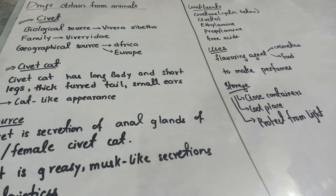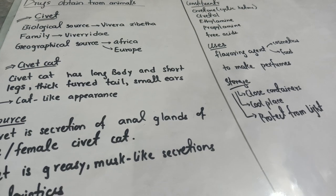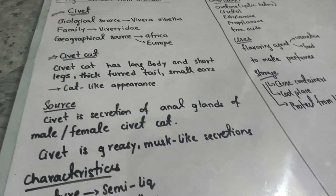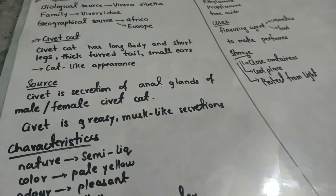The civet cat has a long body and short legs. It has very thick fur on its tail and has small ears. It usually has a cat-type appearance, but there are some differences between the common cat and the civet cat.